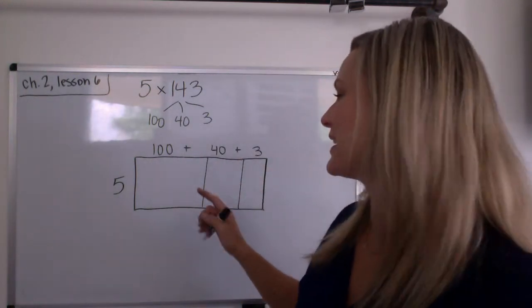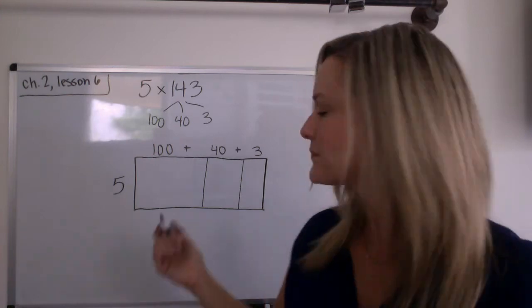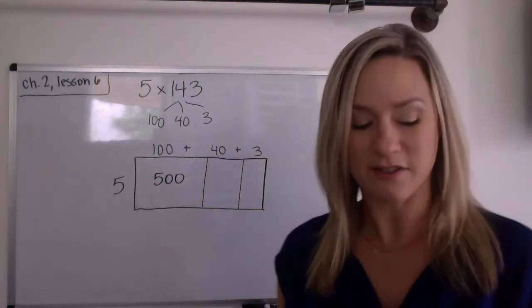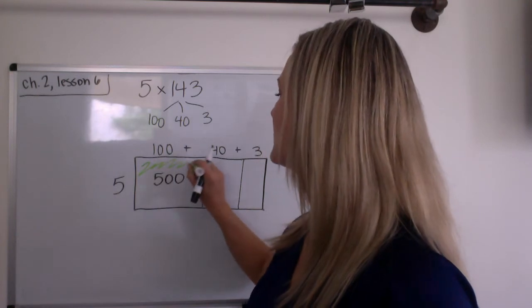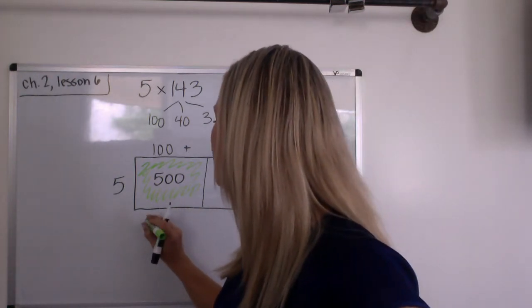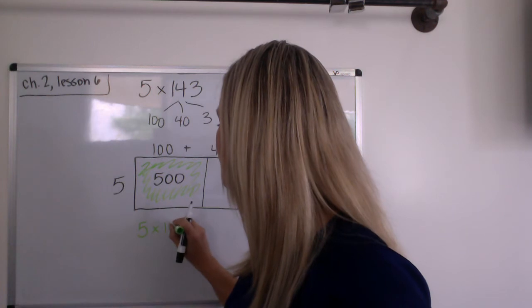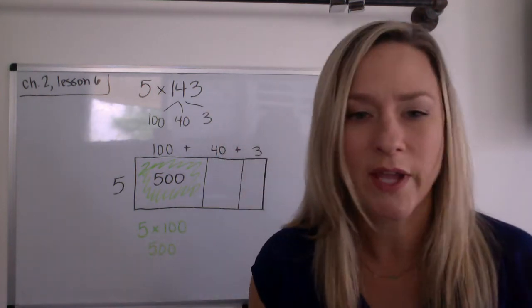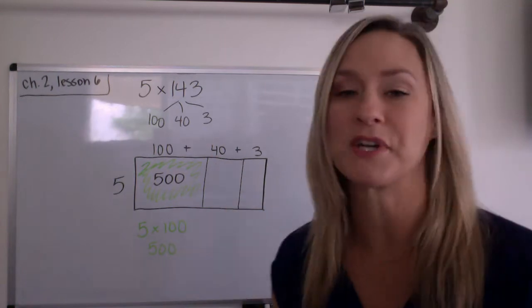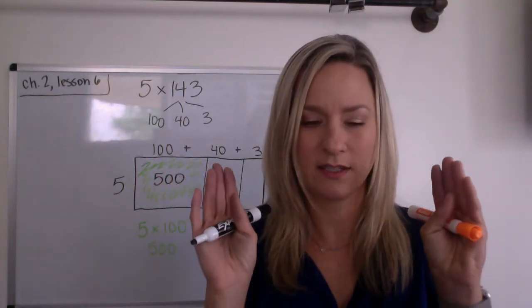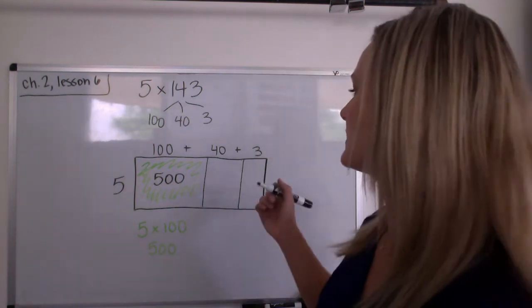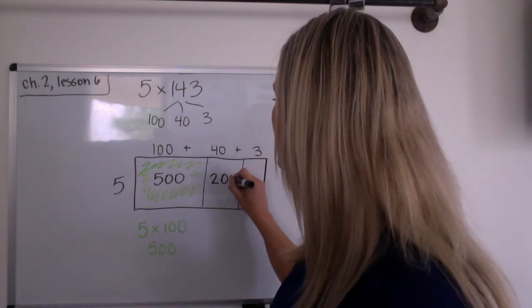So we're going to use the distributive property. So 5 times 100 would be, yes, we probably know that, 500. So, so far, this piece was 5 times 100. I think I'm going to actually go ahead and color code. So that one's going to be green. So 5 times 100 was 500. Now I'm going to do the next piece in orange. So 5 times 40. Well, I know 5 times 4 is 20. And then I know 5 times 40 would be 200. So let's do 200. So that's this piece here. So 5 times 40.